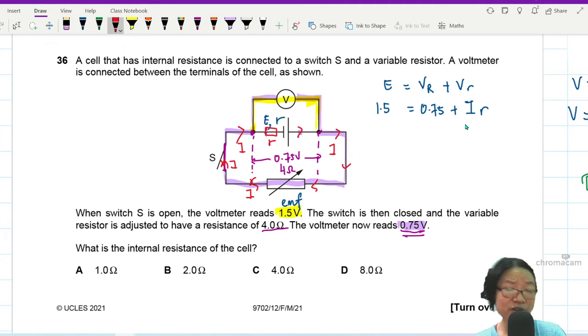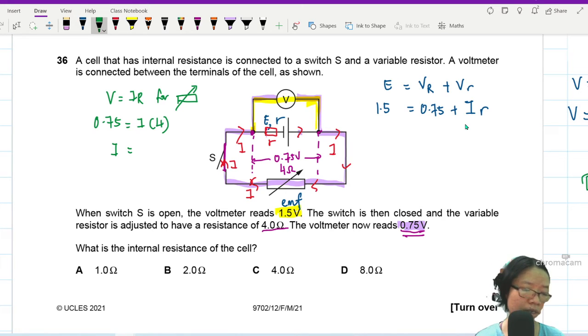Okay, can we find I? Because if I can find I, I can find R. Yes, we can. So we can use V equals IR for the variable resistor. Okay, 0.75 is equal to I times 4. 4 ohm. So you can find current. Current here would be 0.75 divided by 4.